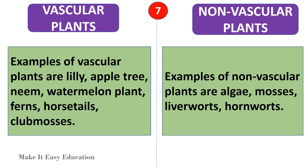Examples of vascular plants are lily, apple tree, neem tree, watermelon plant, ferns, horsetails, club mosses, etc. Examples of non-vascular plants are algae, mosses, liverworts, hornworts, etc.